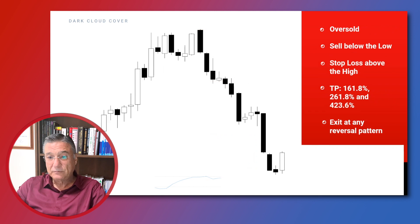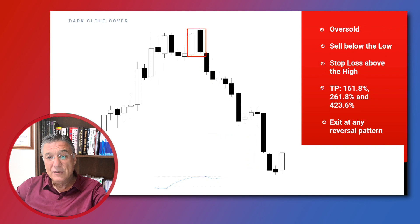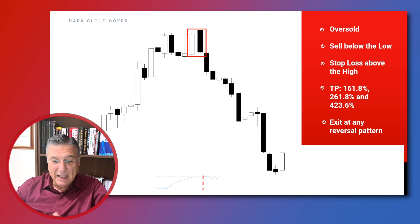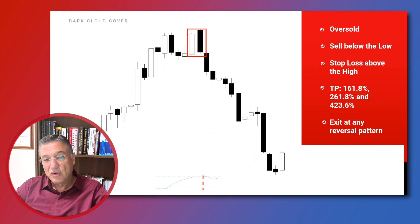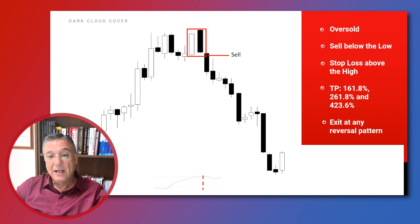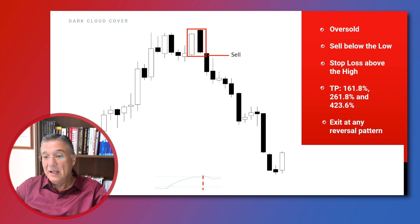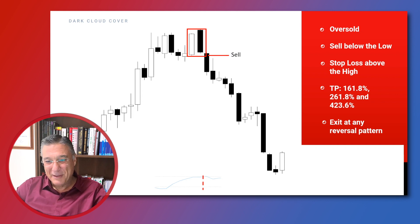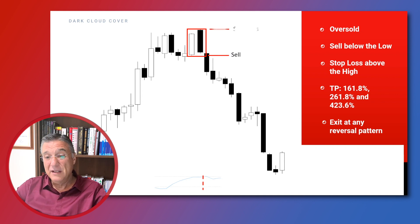Another strategy combines the pattern with an oversold oscillator — our favorite oscillator, whether it's RSI, stochastics, or anything you trust. We identify the dark cloud cover at the top area of the uptrend, place a sell order right below the low price of the pattern, and place a protective stop loss right above the high price of the pattern.